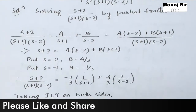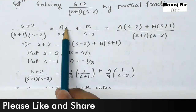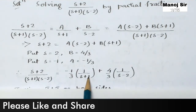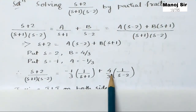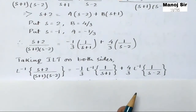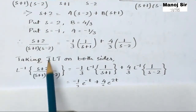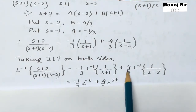Therefore: (s+2)/[(s+1)(s-2)] = (-1/3)·[1/(s+1)] + (4/3)·[1/(s-2)]. Taking inverse Laplace transform on both sides: L⁻¹{(s+2)/[(s+1)(s-2)]} = (-1/3)·L⁻¹{1/(s+1)} + (4/3)·L⁻¹{1/(s-2)}.